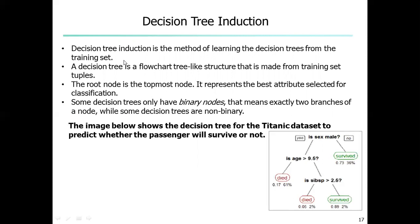A decision tree is like a flowchart tree-like structure made up of a training set of tuples. These training tuples have a data set broken down into smaller parts — a divide-and-conquer policy — into smaller subsets, presented in the form of nodes like a tree. The tree structure has a root node, internal nodes, decision nodes, leaf nodes, and branches.